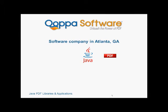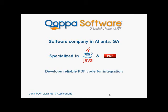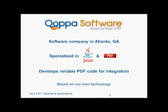Welcome to our video introduction of Copa Software's Java PDF developer products. We're a software company located in Atlanta, Georgia, specializing in PDF and Java for the last 10 years. We deliver reliable PDF code for you to integrate within your applications and web apps. Our software is all based on our own technology, requiring no additional downloads or licenses to deploy.